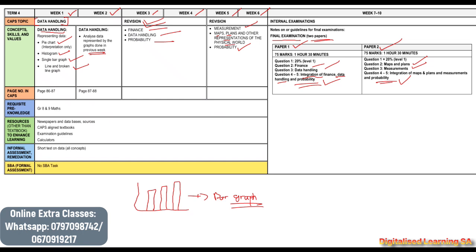Probability is almost on both papers, so you need to understand probability. If you are struggling, just join our online extra classes and we will help you. We will help you get to grade 11. This brings us to the end of our scope for term 4.